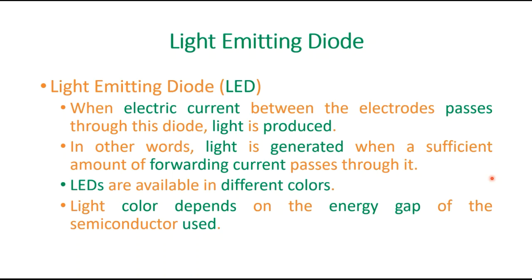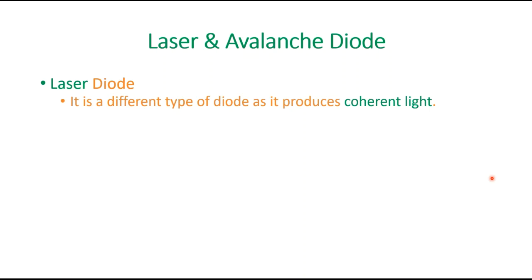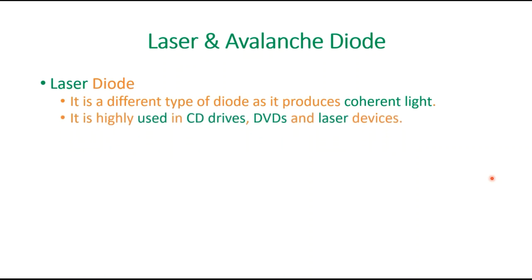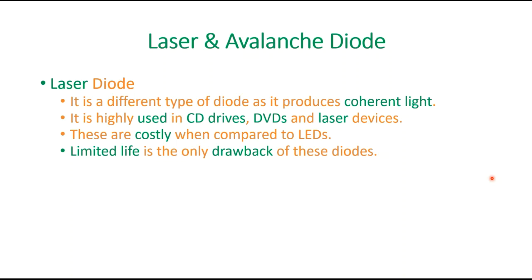Nowadays in the market you can find different kinds — red, blue, green — all kinds of LEDs, and this comes due to the energy gap of the semiconductors used. A laser diode is a different kind of diode as it produces coherent light. It is mainly used in CD drives, DVDs, and laser devices. It is a little more costly compared to other diodes like LEDs, and has a limited lifespan, which is its main drawback.